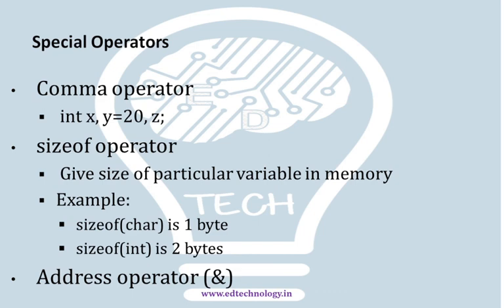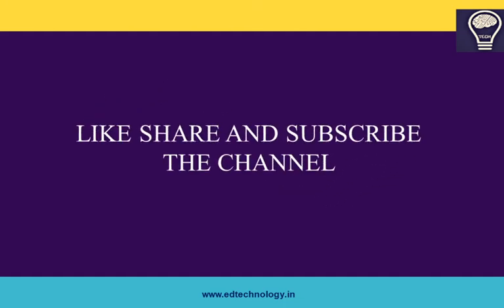So these are the operators in C used to perform different operations. In the earlier video we discussed them either on the basis of operands — unary, binary, and ternary — or the eight classes of operators on the basis of their operations. That's it for the operators. If you like our efforts please like, share, and subscribe to the video. If you have any queries feel free to comment in the comment section. Thank you so much, have a great day.